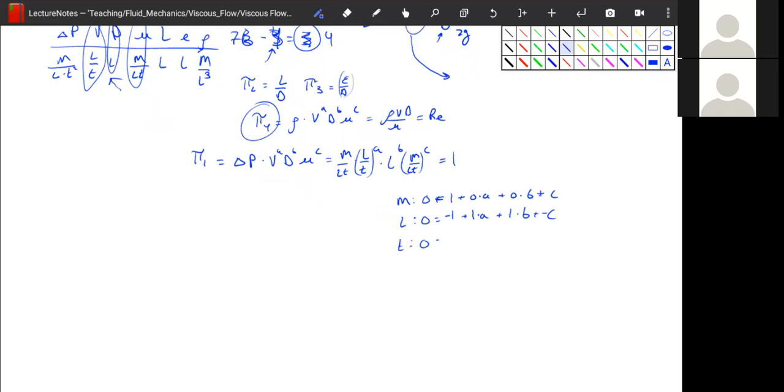And our time, we have zero is equal to negative, squared there, negative two plus negative one A plus B, zero times B plus negative C.